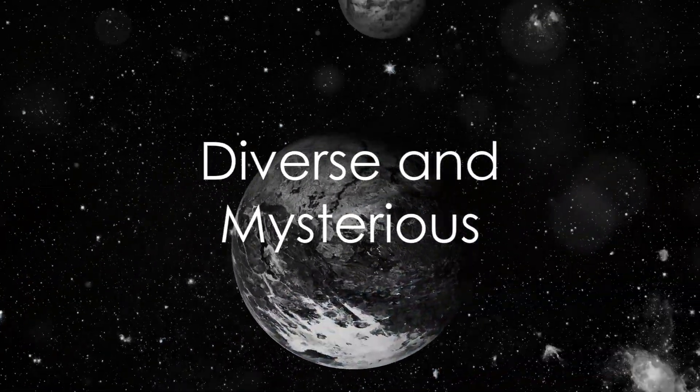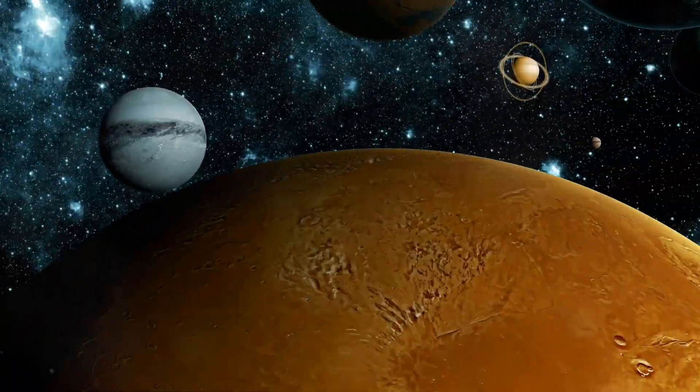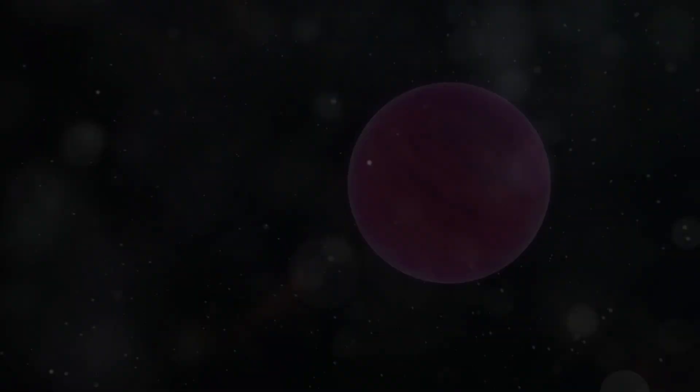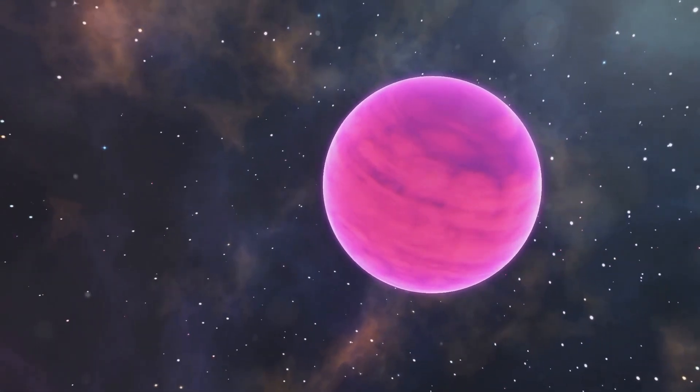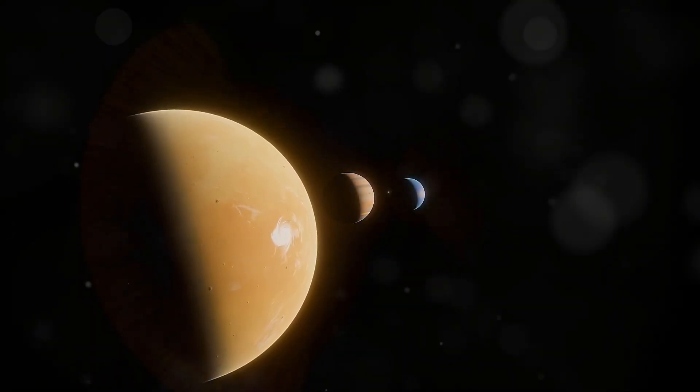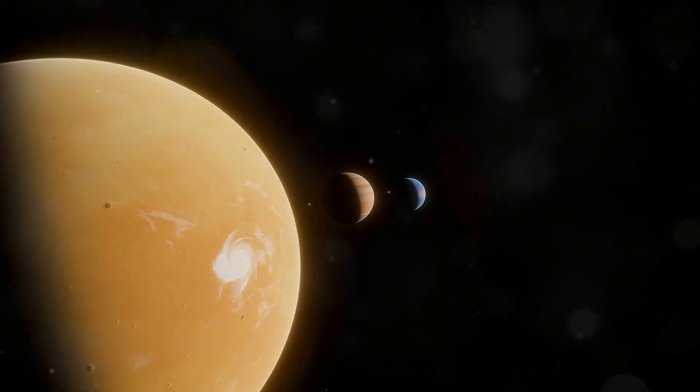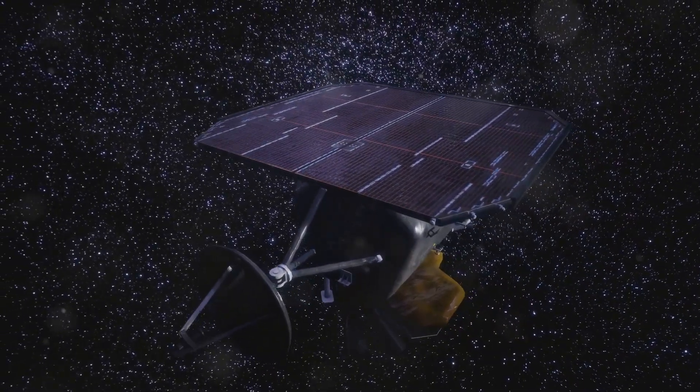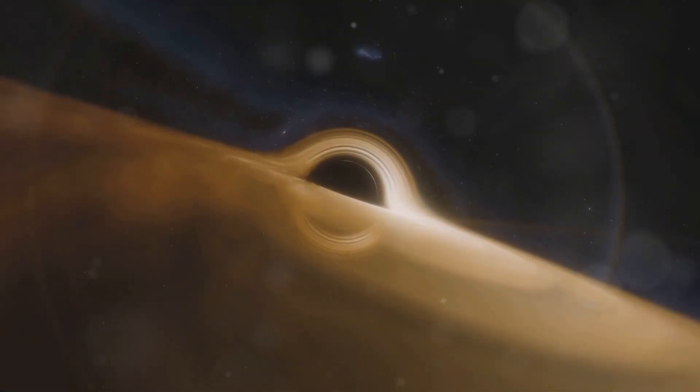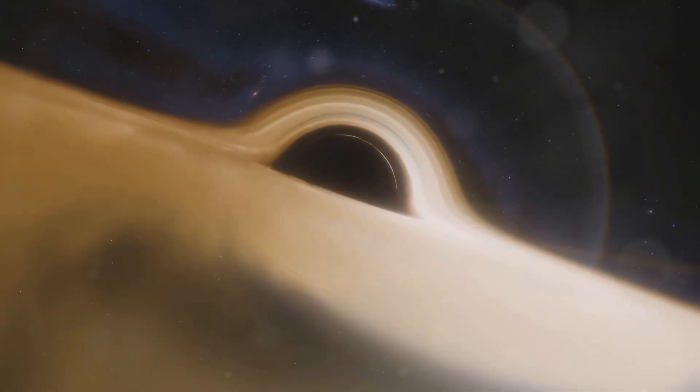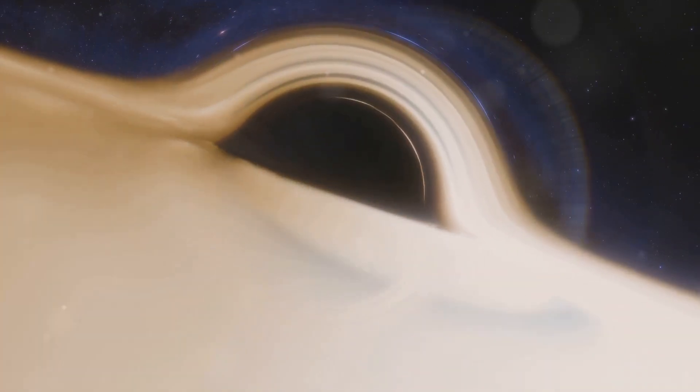What do these rogue planets look like? It's a question that sparks the imagination. Because they don't orbit a star, rogue planets are incredibly difficult to detect. We can't rely on the dimming of starlight to find them as we do with exoplanets. Instead, astronomers use a technique called gravitational microlensing. This method relies on the way a massive object like a rogue planet can bend and magnify the light from a distant star.